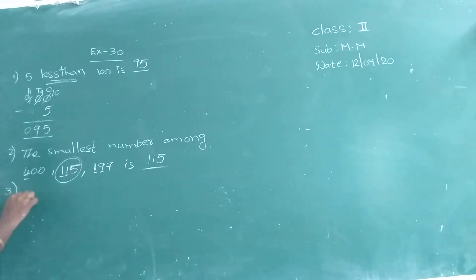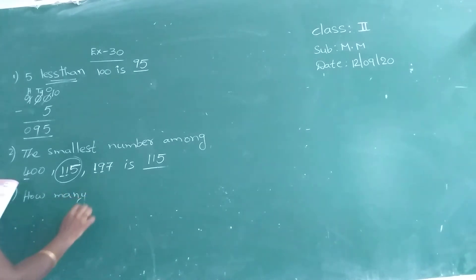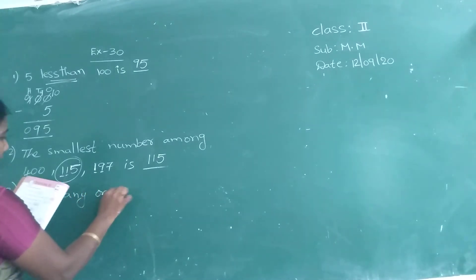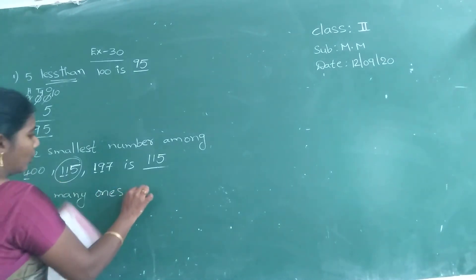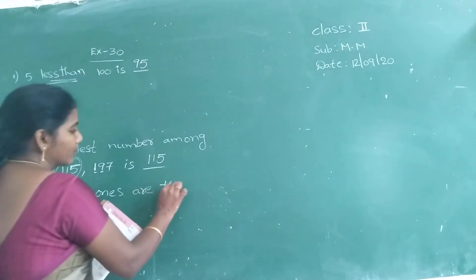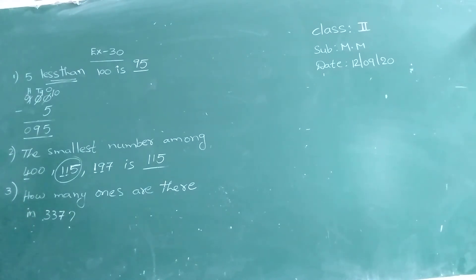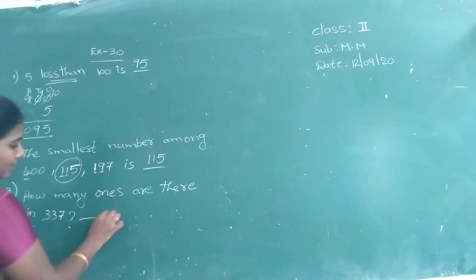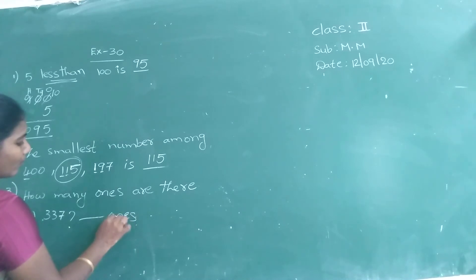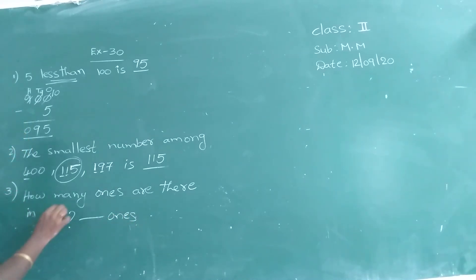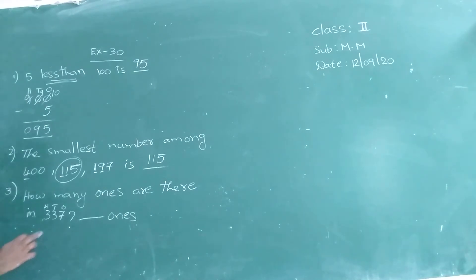How many ones are there in 337? They are asking how many ones. So first look at the ones place — which number is in the ones place? 7.